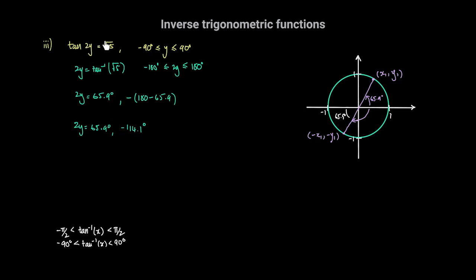So the possible values of y are 65.9 divided by 2, which gives us 32.5 degrees, and negative 114.1 divided by 2, which gives us negative 57.0 degrees. Both of these values of y satisfy the given range, so these are the only values of y in the range negative 90 degrees to 90 degrees for which the tan of 2y is equal to the square root of 5.